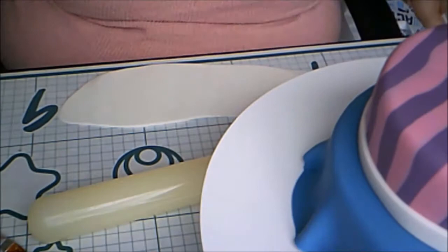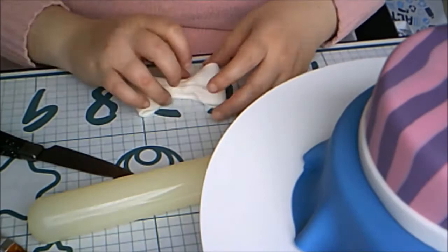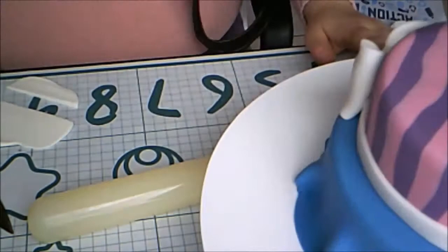Then I made a fondant bow out of white fondant. If you need a tutorial on how to make a fondant bow, see the link in the card. I placed it on one side of the cake.